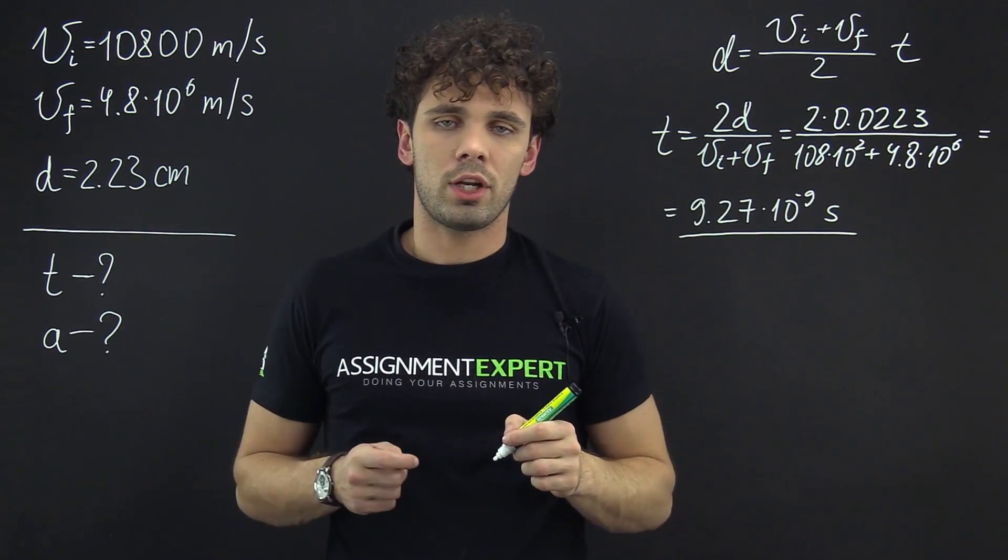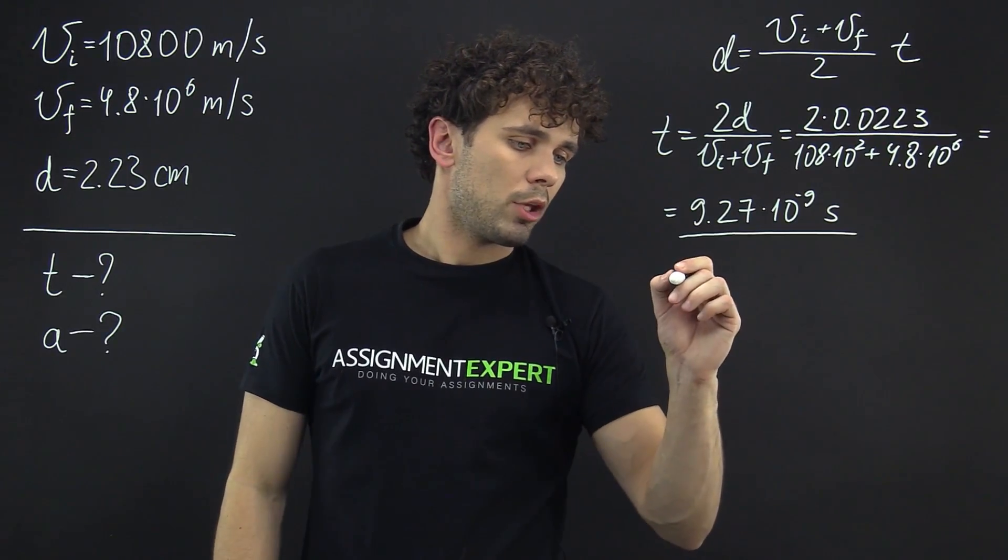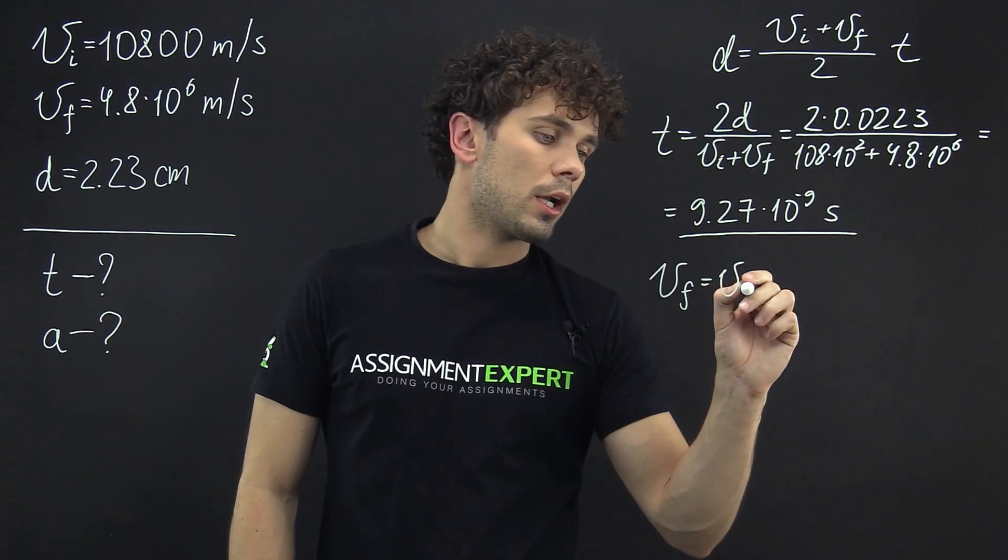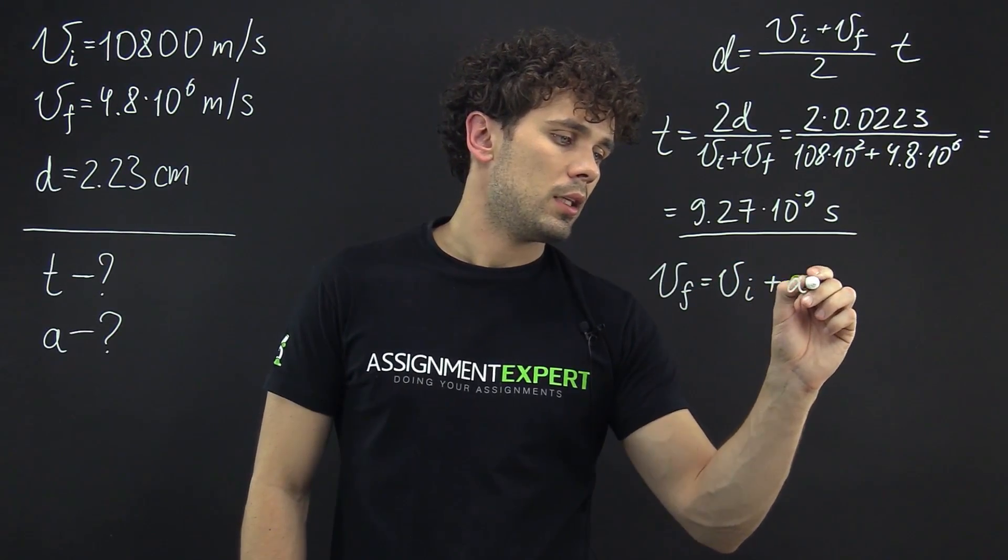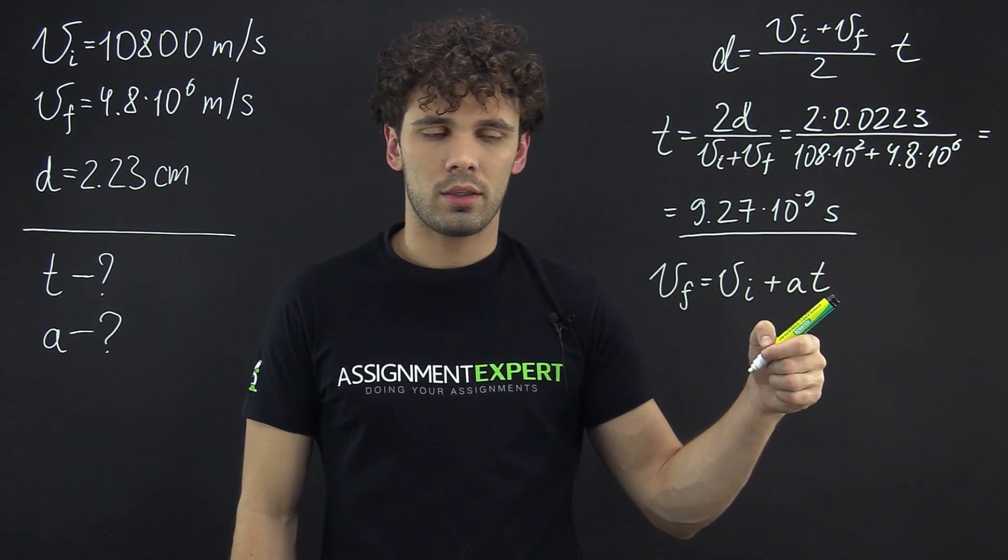Now the acceleration. For that we need to recall another kinematic equation. This time we have the equation vf equals vi plus a times t. Again, we have the final and the initial speed, the acceleration and the time.